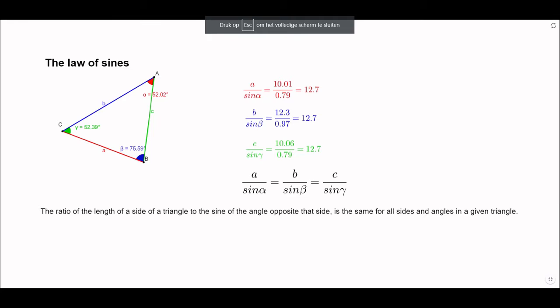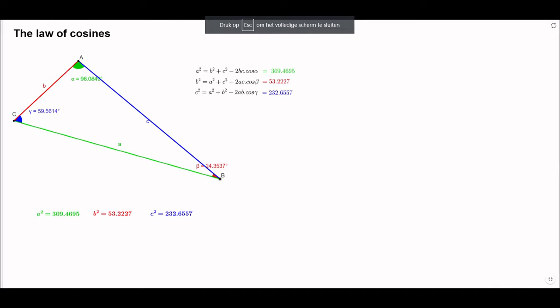The law of sines is the relationship between the sides and angles of non-right-angled triangles. It states that the ratio of the length of a side of a triangle to the sine of the angle opposite to that side is the same for all sides and angles in a given triangle. The law of sines is written as: a over sine alpha equals b over sine beta equals c over sine gamma. You can see a triangle with sides a, b, and c and angles alpha, beta, and gamma, which correspond to the length directly opposite.